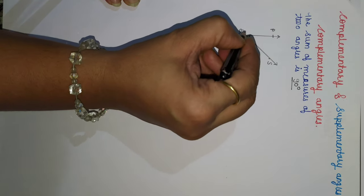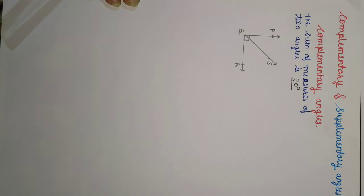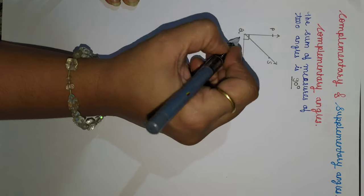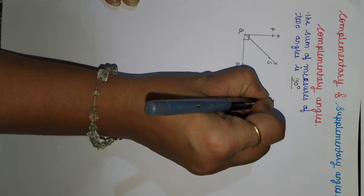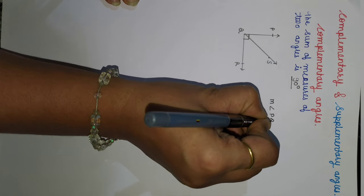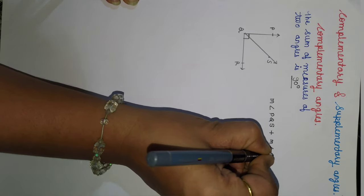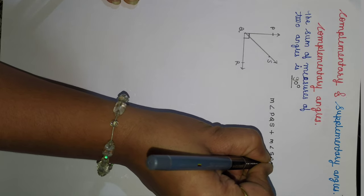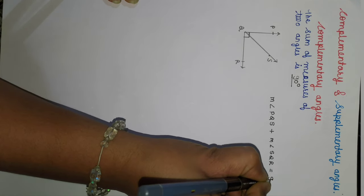That is, angle PQS and angle SQR. Now, if we add the measure of these two angles — that is, measure of angle PQS plus measure of angle SQR — it is equal to 90 degrees.